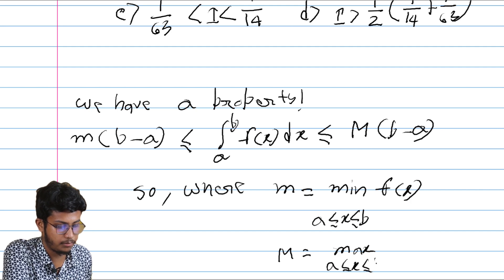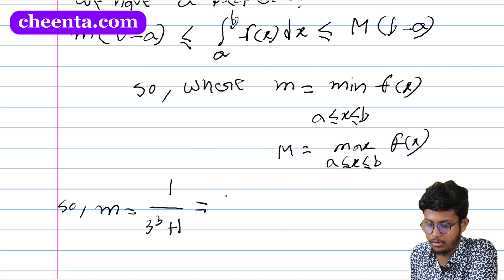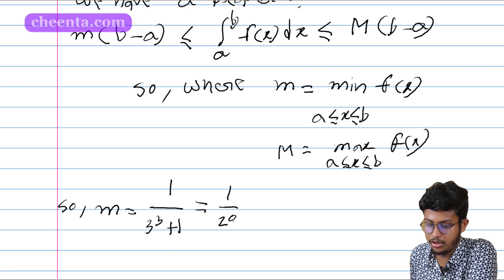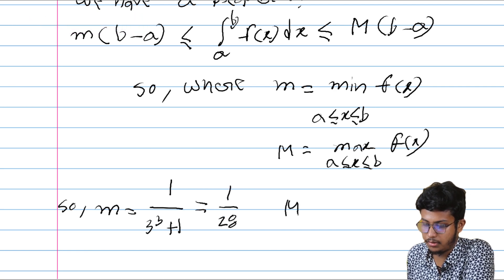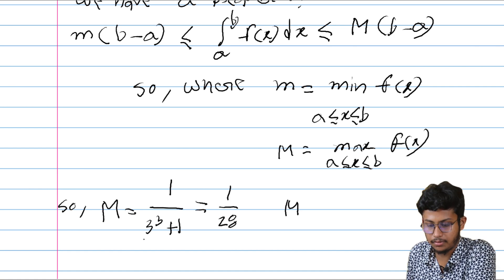So nearly here m is equal to 1 by 3 cube plus 1 that is equal to 1 by 28. And capital M, so that is equal to capital M. And small m is equal to 1 by 5 cube plus 1 that is equal to 1 by 126.